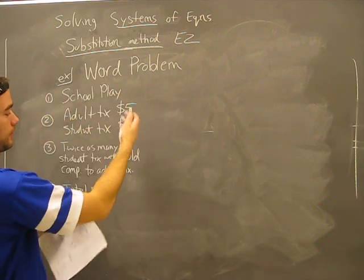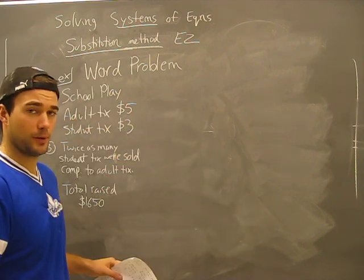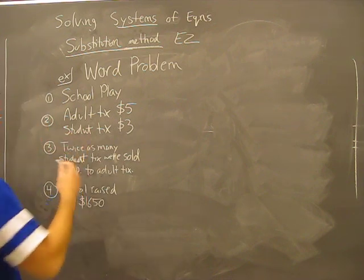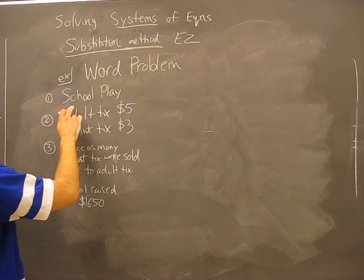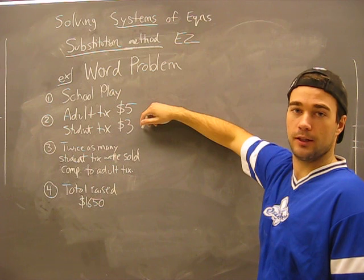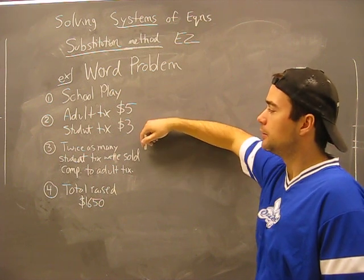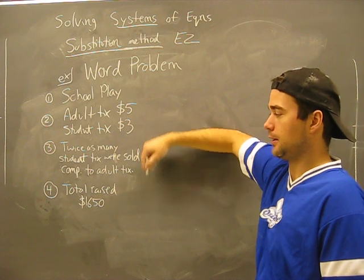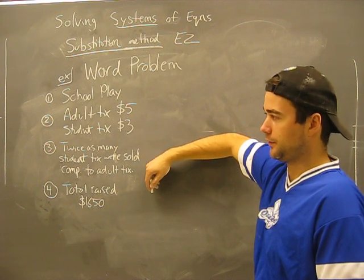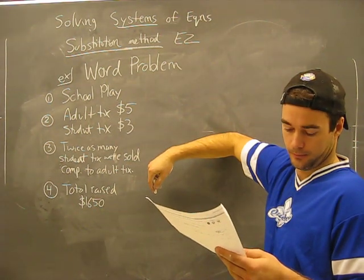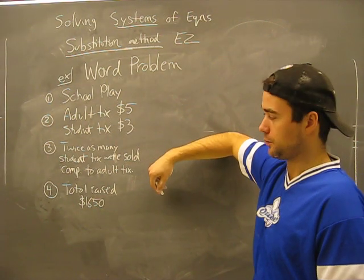Here's a word problem. I've just taken out the important bits of it because I want to expedite the video. Here's the situation. There's a school play. Adult tickets are five bucks, student tickets three bucks. Point three, twice as many student tickets were sold compared to adult tickets for a total raised of $16.50. What's the actual question? How many of each tickets were sold?